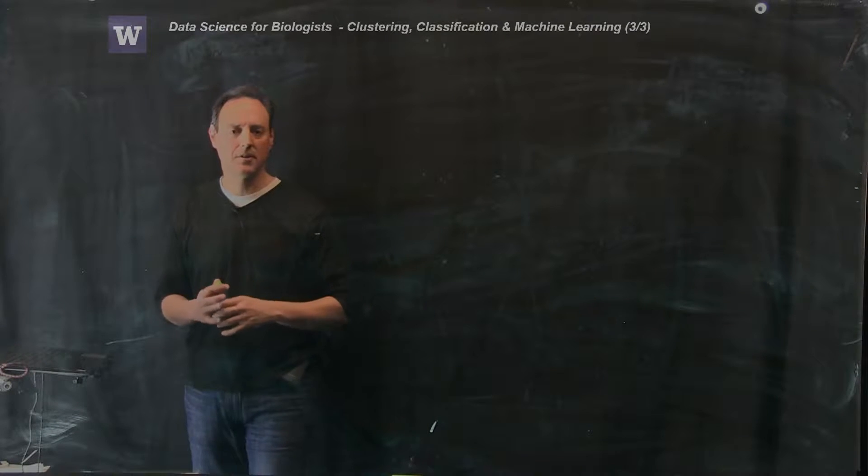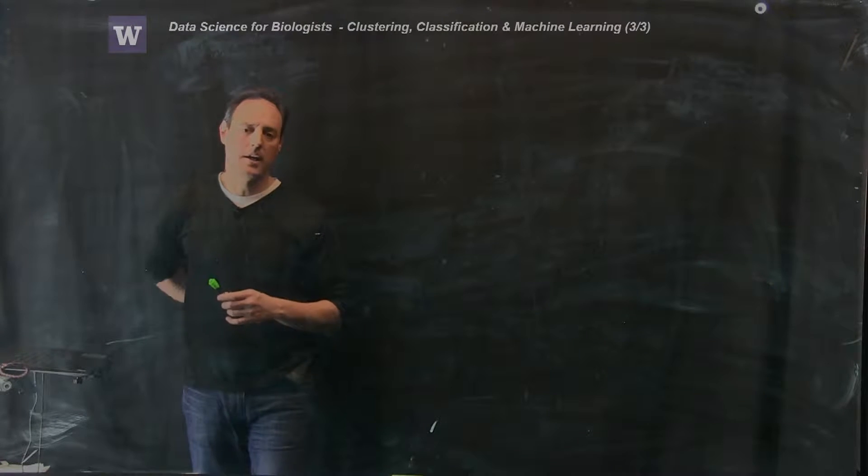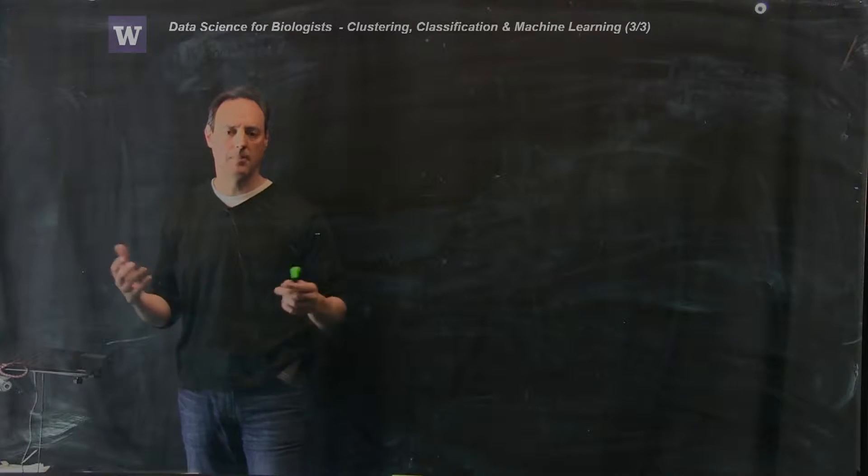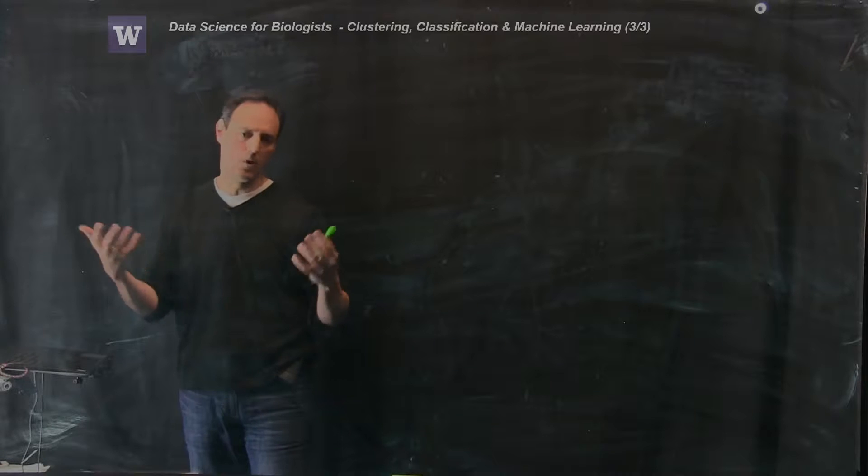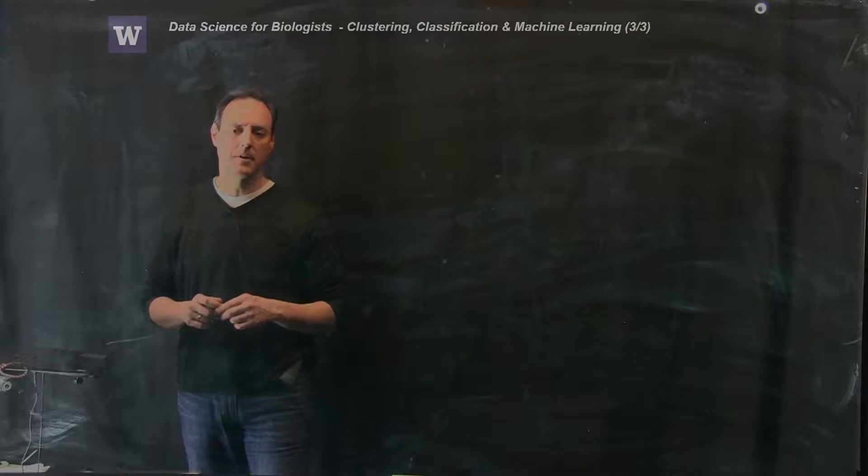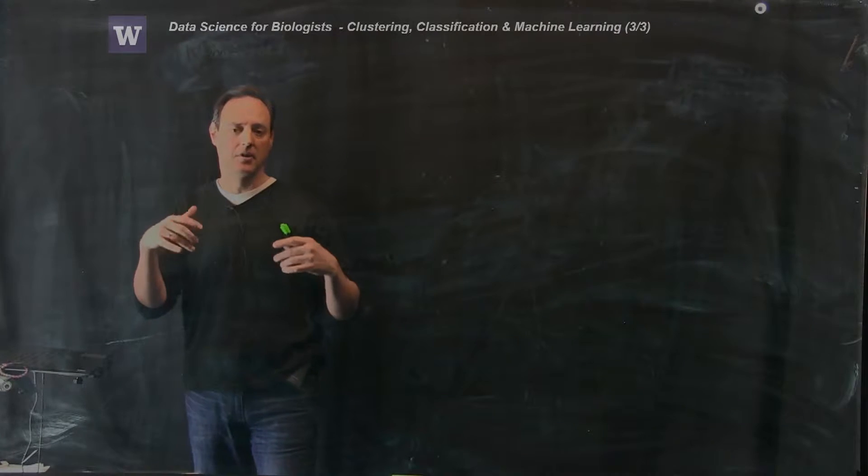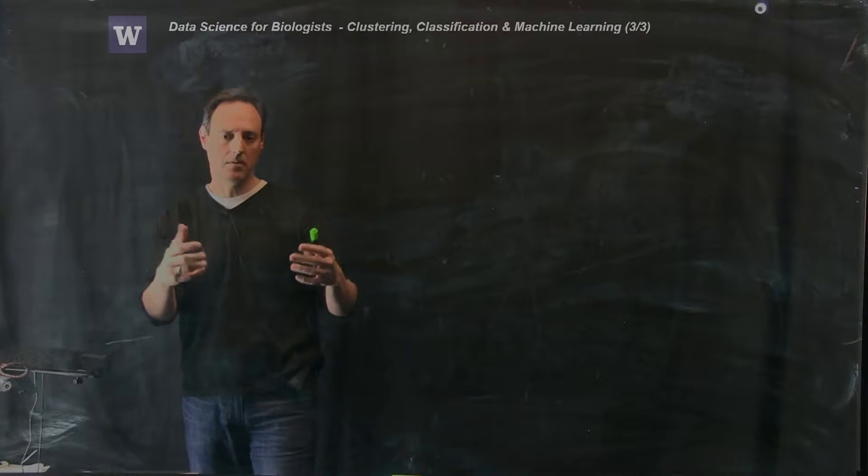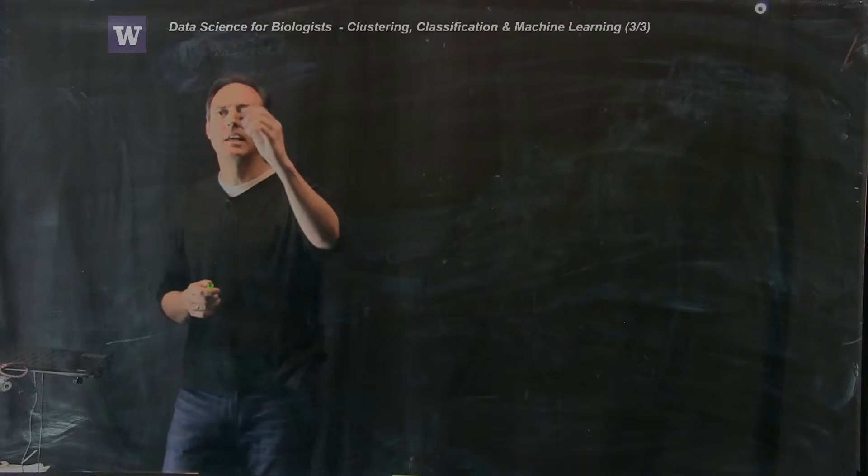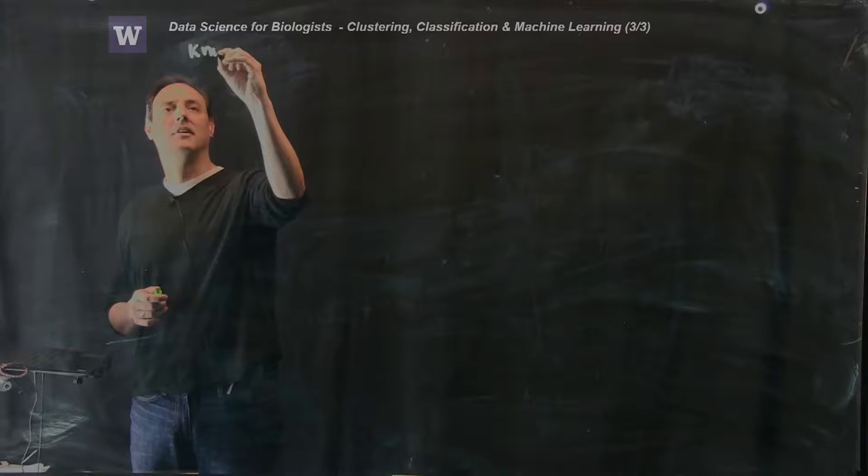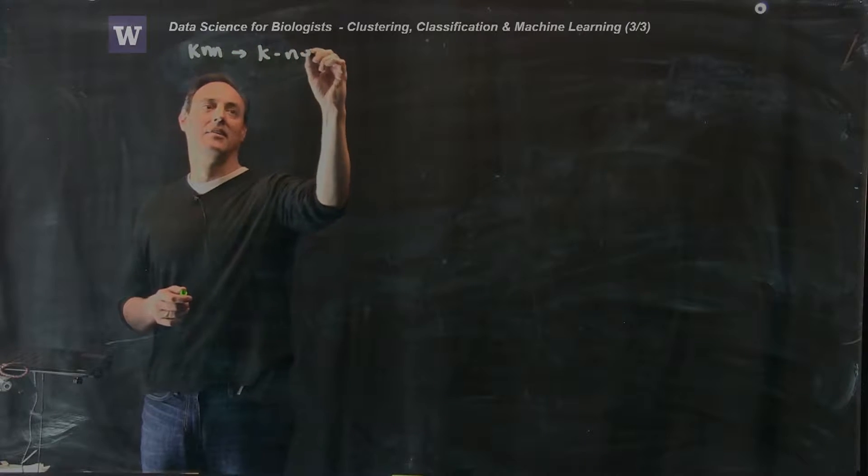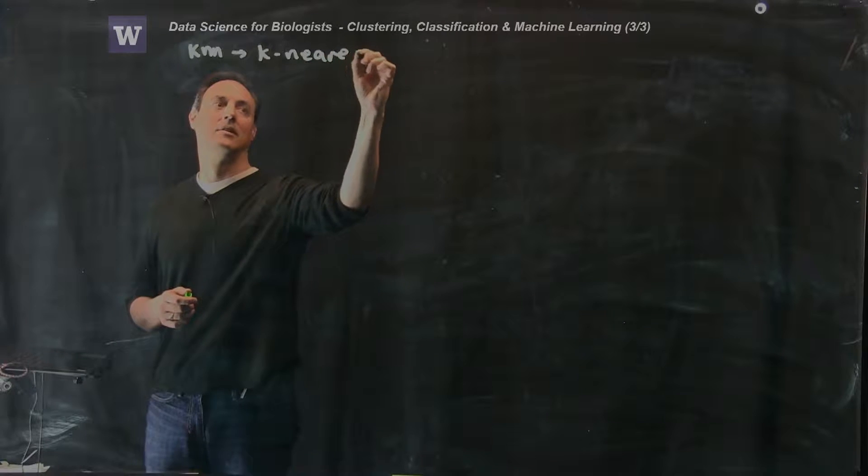This is the third part of the first lecture, and what I want to talk about in this last piece is perhaps the most common and one of the easiest algorithms out there, very much like the k-means. It's extremely simple to think about and implement, and it's called k-nearest neighbors.